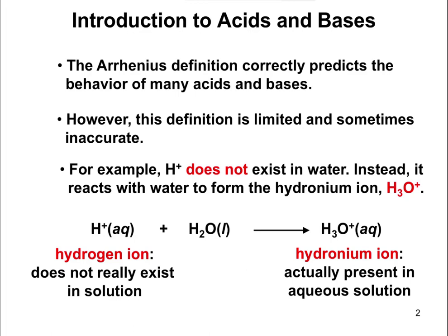One of the main reasons the Arrhenius definition is limited is it talks about having a free H+ in solution. An H+ does not exist free in water — whenever you have a free H+ around, it reacts with H2O to form what's known as a hydronium ion, H3O+. So anytime you think of an H+, these hydrogen ions don't exist free in solution; they immediately react with the surrounding water to form H3O+, the hydronium ion.